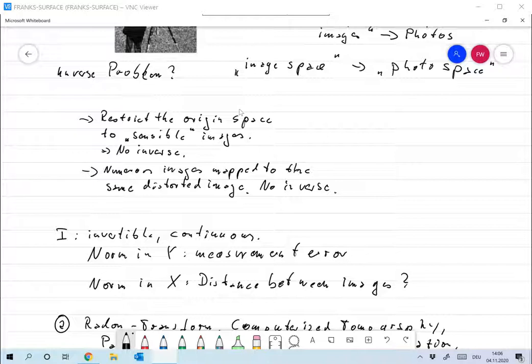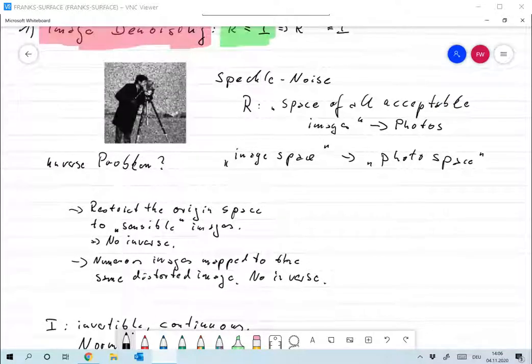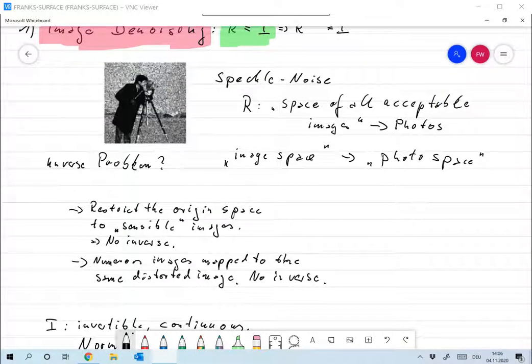Now, the norm in Y is quite clear, because this is the data that is given to us by an experimentator, by a physicist or whoever. And he can tell us in which norm he can actually limit the measurement error. So that's quite clear. But what should we use as a norm in X? I remind you that that's the space of all acceptable images, of all images that we find in nature.